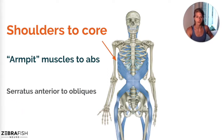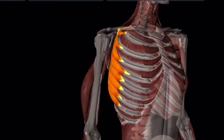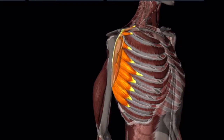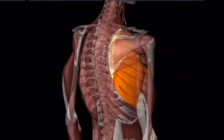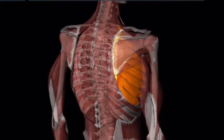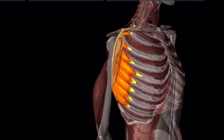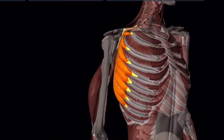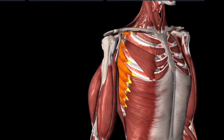Just to show the serratus anterior in isolation, you can see how it kind of attaches to the rib cage and the medial border of the scapula on the underneath side. It pulls that scapula around the rib cage underneath the armpit, and we'll also see how it interdigitates with the oblique abdominals.